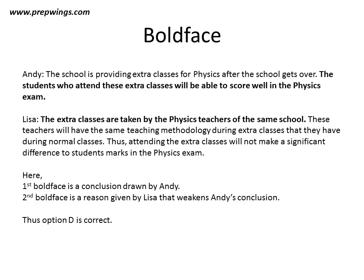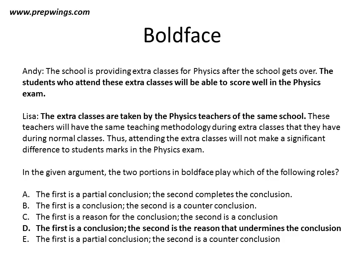If you look at it, the first boldface is a conclusion drawn by Andy. It says that the students who attend these extra classes will be able to score well in the physics exam — so this is a conclusion drawn by Andy. The second boldface is a reason that weakens Andy's conclusion, because Lisa says the extra classes are taken by the physics teachers of the same school. So this is a reason given by Lisa to weaken Andy's conclusion. Thus option D is the correct answer, which says the first is a conclusion and the second is the reason that undermines the conclusion.